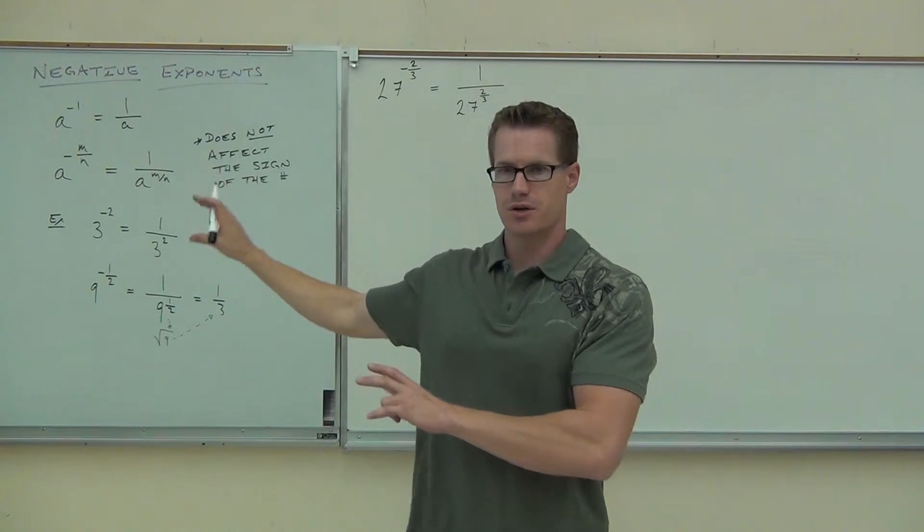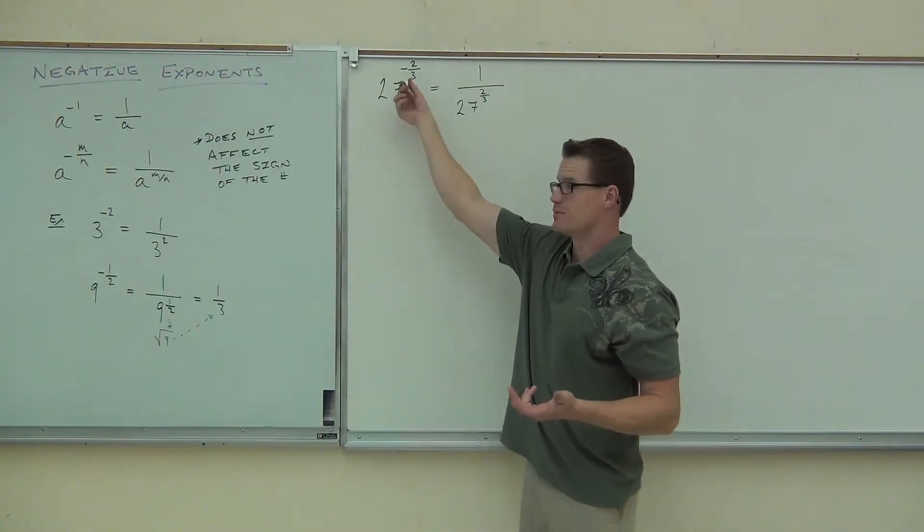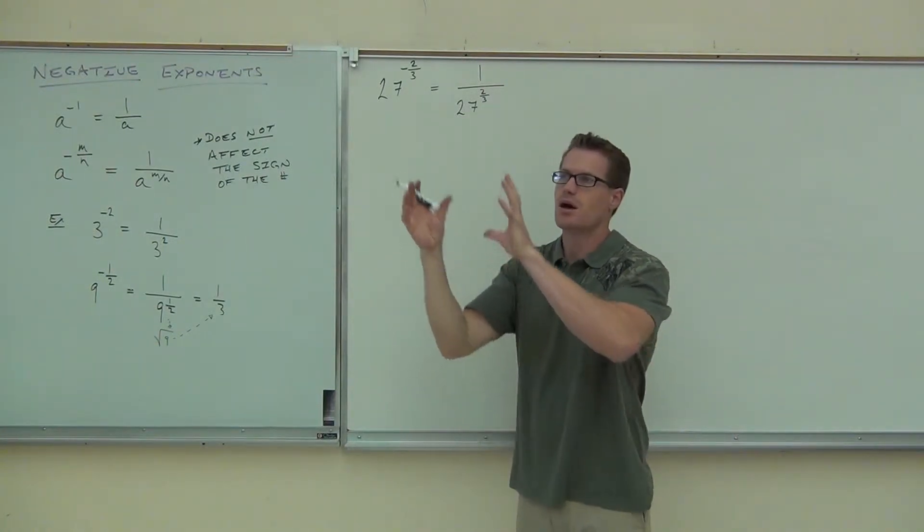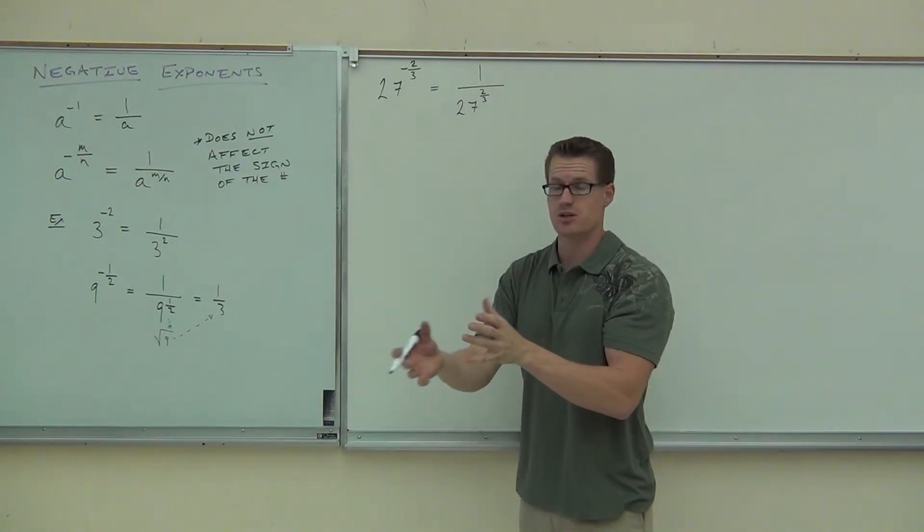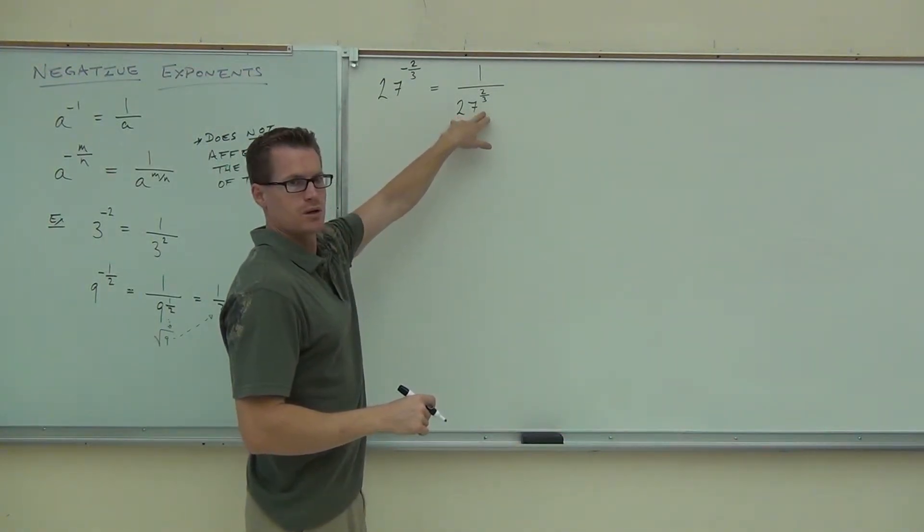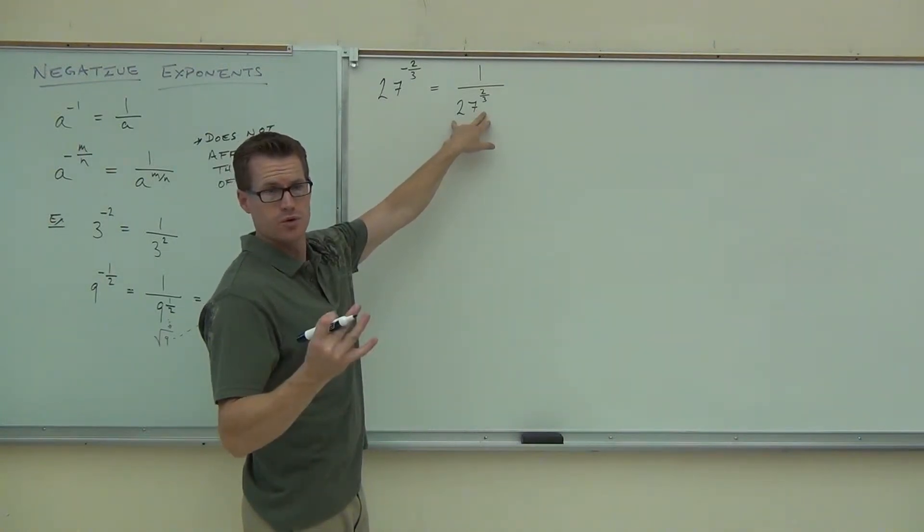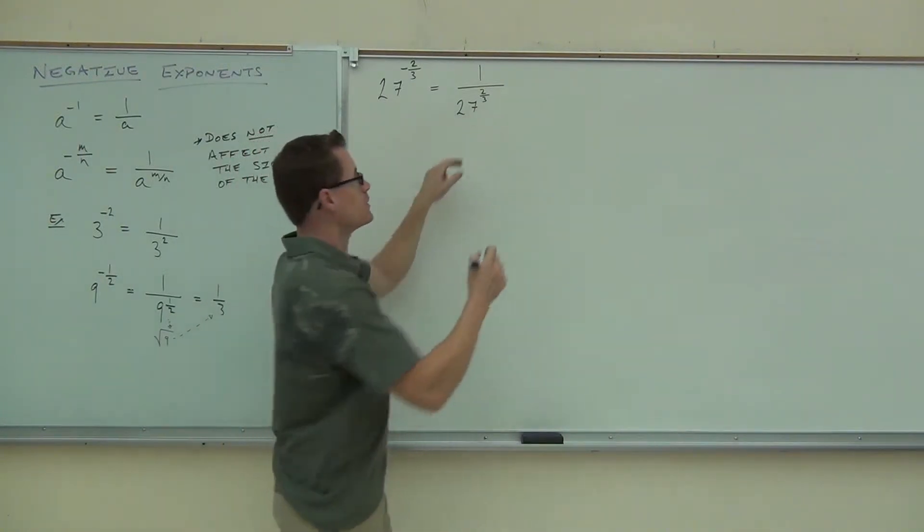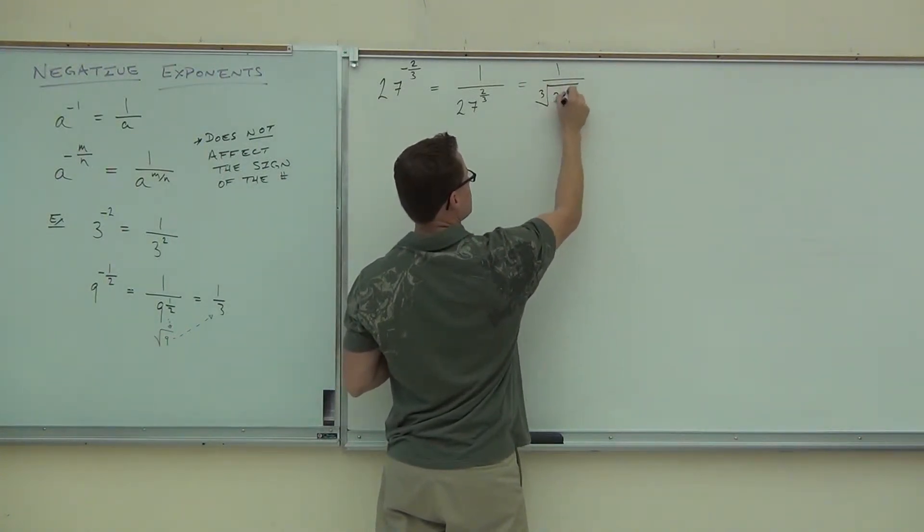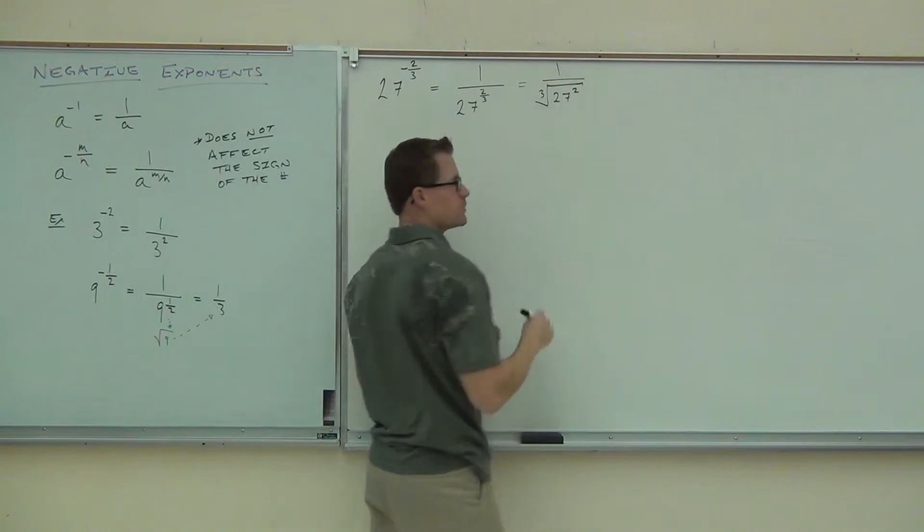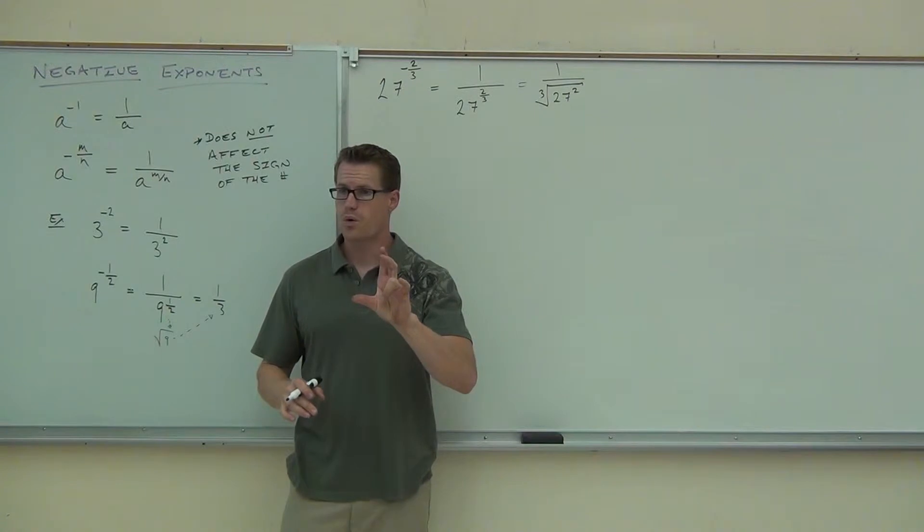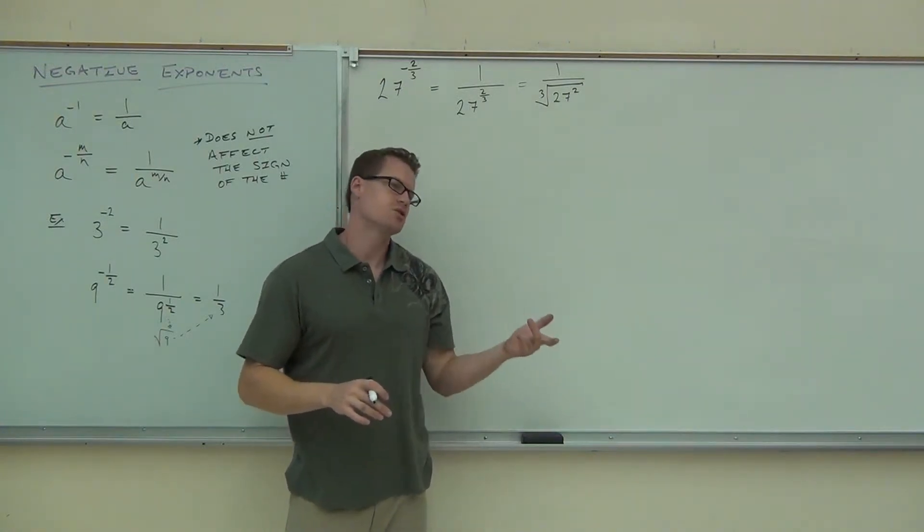Now once we've done that, we have the positive exponent. Now we can use what we just learned and simplify the thing. You can't really simplify here. It doesn't really work. We don't know how to deal with a negative version of a root. What that means is, okay, just move it to the denominator of a fraction. That's really what it means. So here, can you simplify 27 to the 2 thirds? What type of root do you have? Cube. Cube root. What type of power do you have? 2. So what this means is 1 over a cube root of 27 squared.